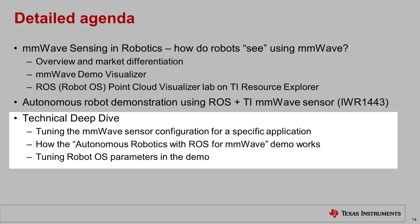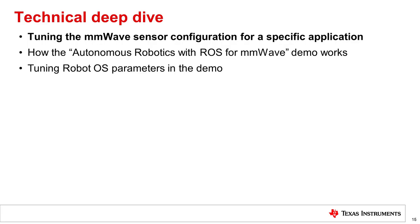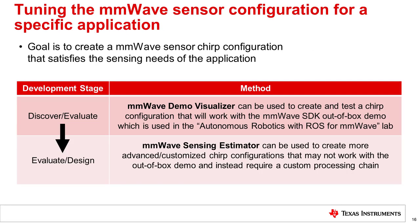You may want to go back and review the first portion of the training if you have not done so already. First, let's look at how to tune the millimeter wave sensor configuration for a specific application. Our goal in this process is to create a millimeter wave sensor chirp configuration that satisfies the sensing needs of the application.